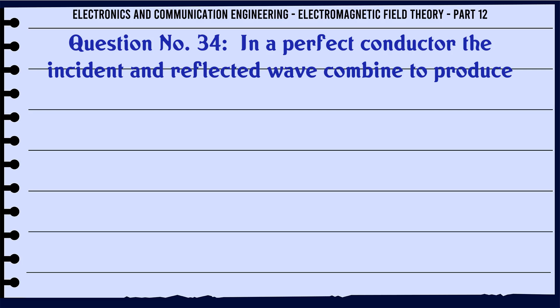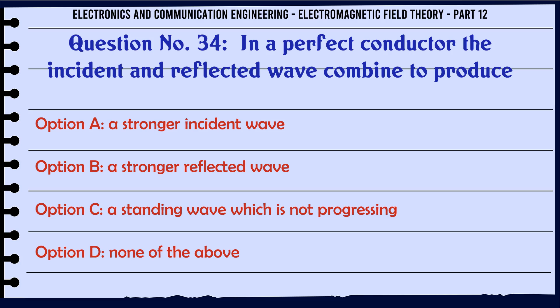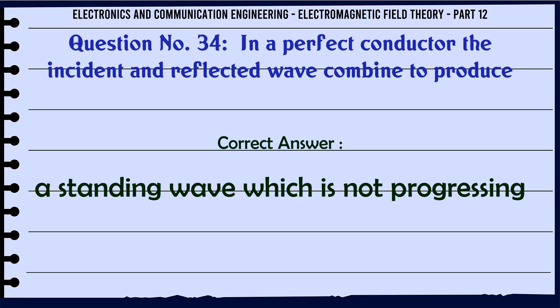In a perfect conductor, the incident and reflected wave combine to produce: A. A stronger incident wave, B. A stronger reflected wave, C. A standing wave which is not progressing, D. None of the above. The correct answer is a standing wave which is not progressing.